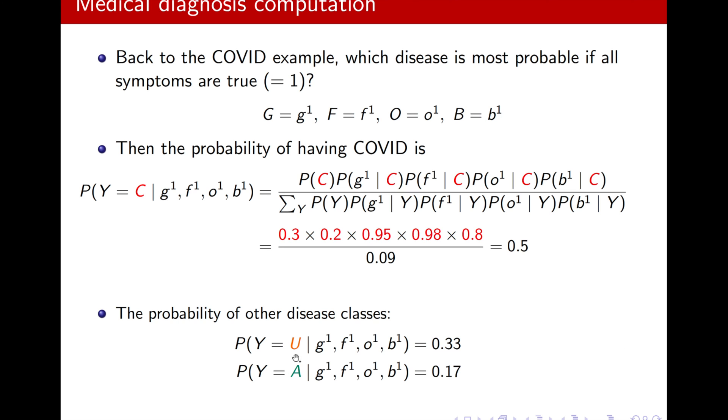For these two classes, flu and allergy, the probabilities are here. And I see that 0.5 is greater than both of them. So, COVID is the most probable disease because the probability is greater than the probability of the other two diseases. And they add up to 1.